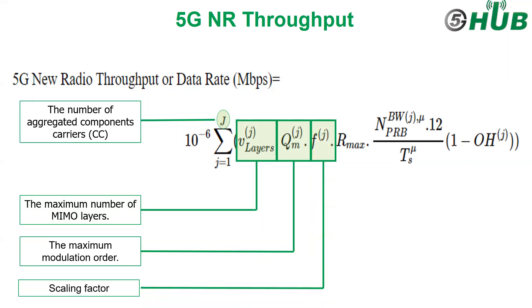The next term is F^J. This scaling factor is used for medium and high mobility and should be configured per carriers. It can take the following values: 0.4, 0.75, 0.8, and 1.